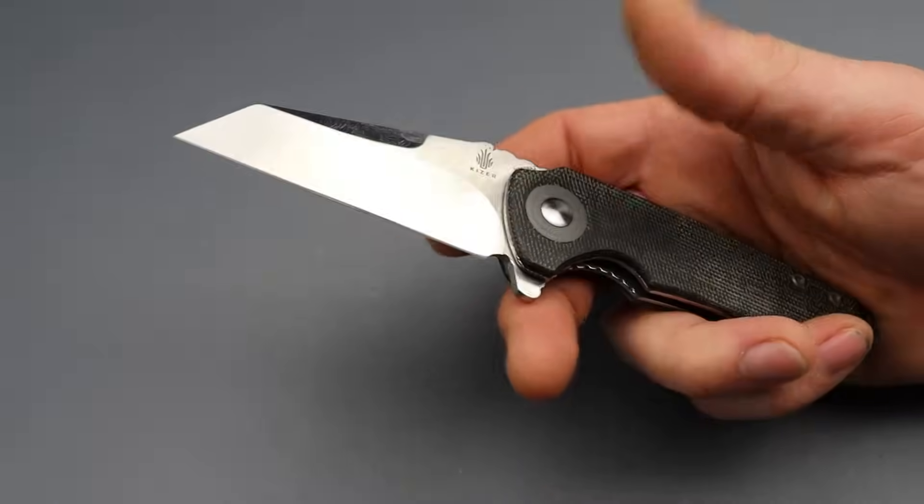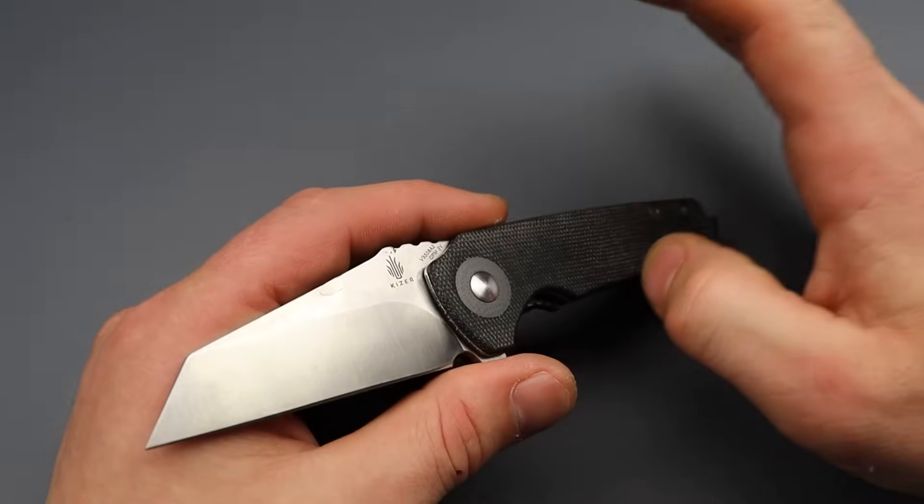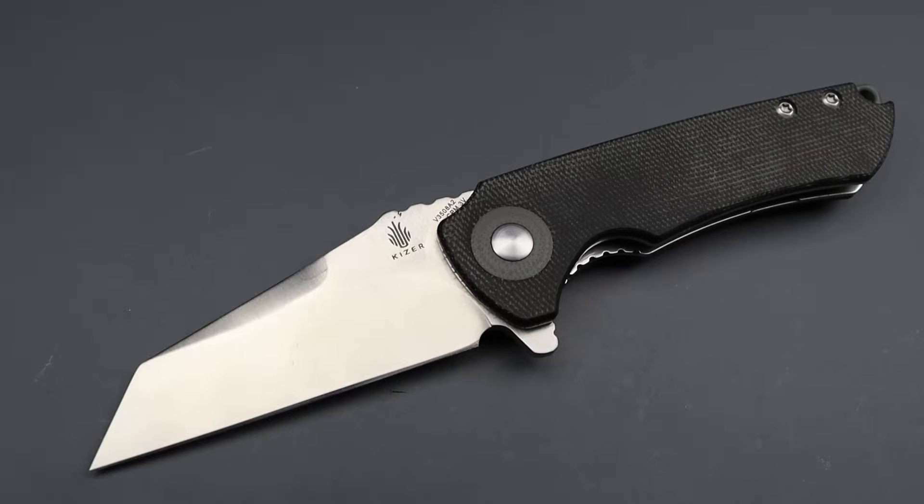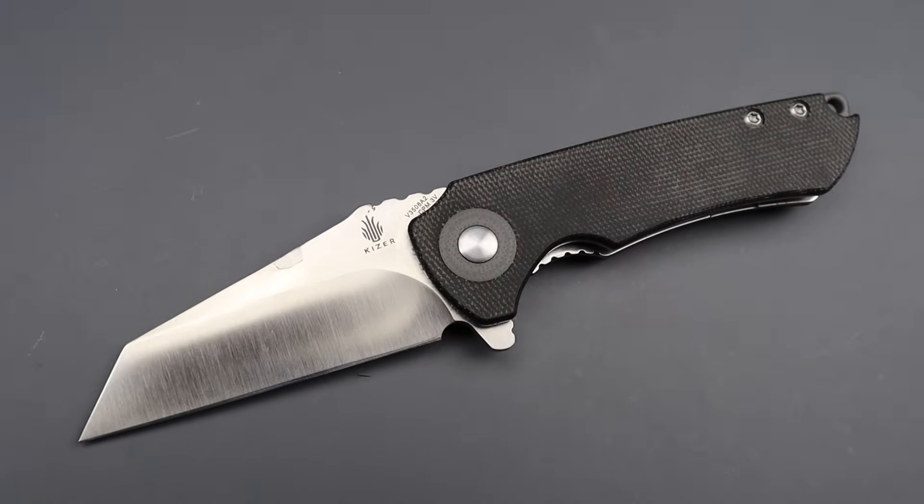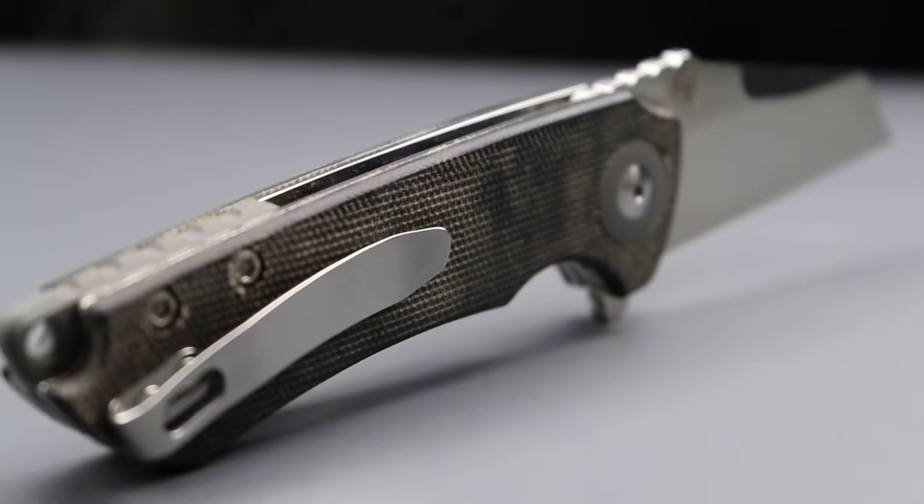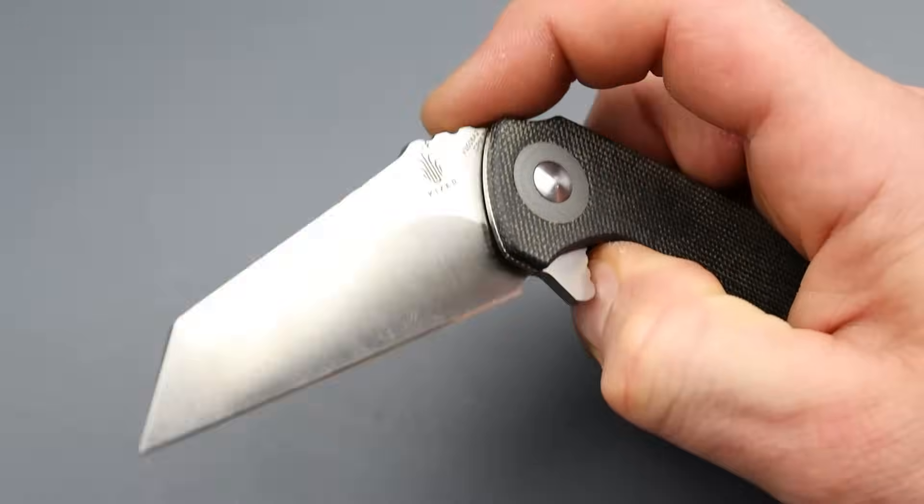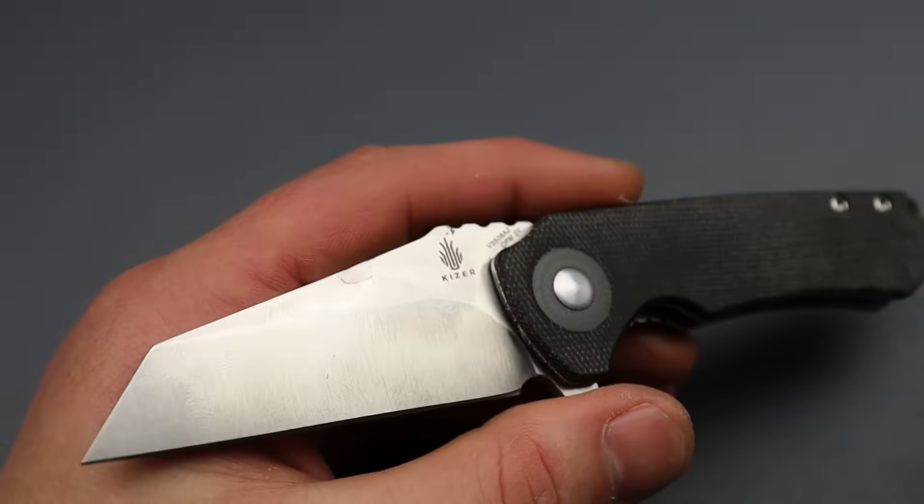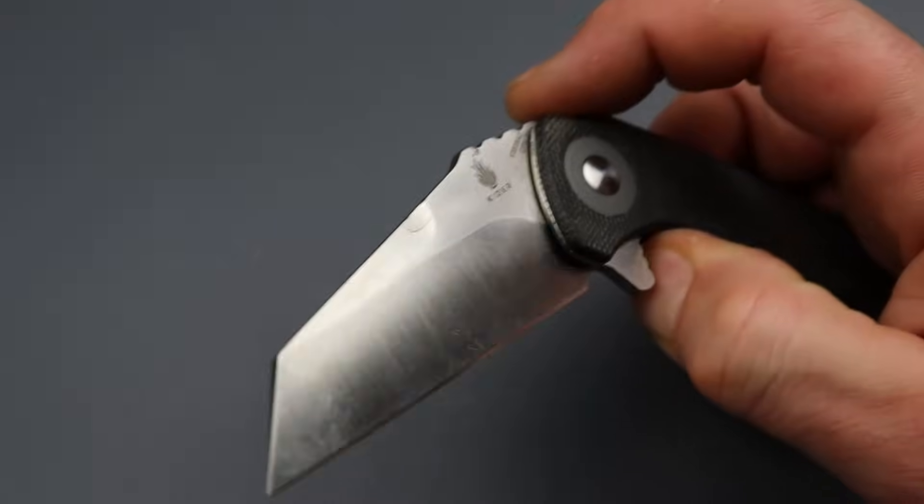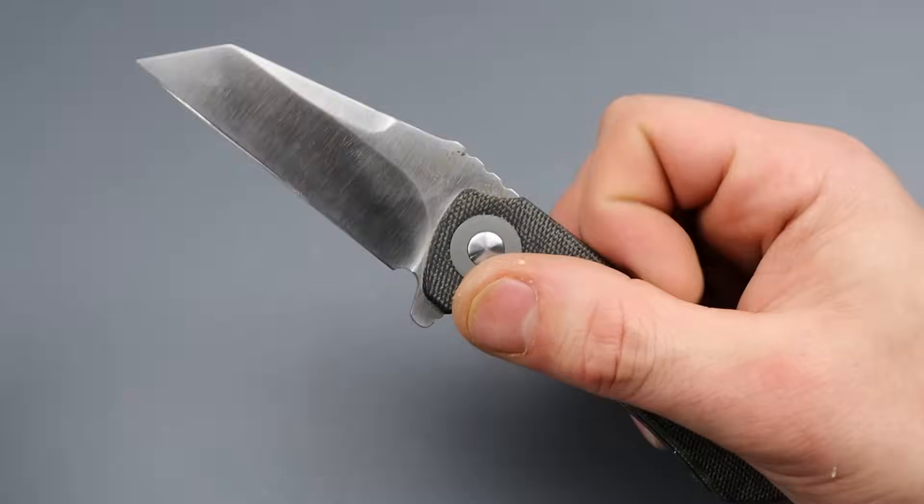So the next ones are from Kizer. So Kizer has a huge sale going on on their site. And I found the mini critical for like, man, I forget now, like 50, 60 bucks. This thing was originally a hundred dollars. It's 3V steel. So for 3V steel for a hundred dollars, when it first came out, that was already a phenomenal deal. Now it's like 50 or 30% off. I don't know. It's cheap. It's the cheapest I've ever seen it. And that is a phenomenal deal. In my opinion, this is an amazing work knife.